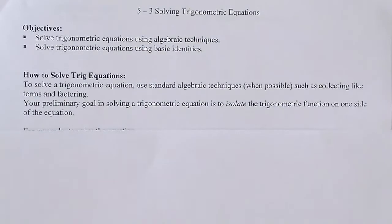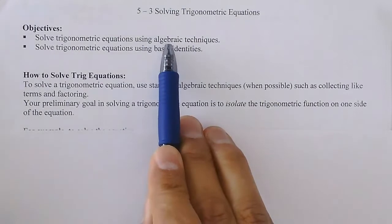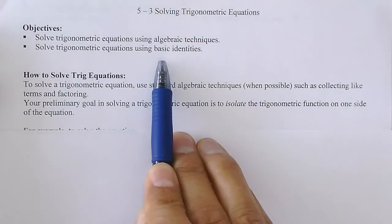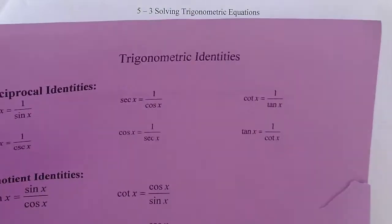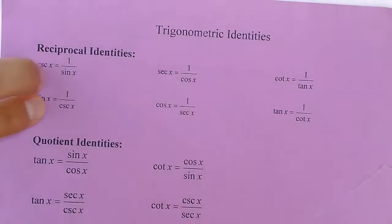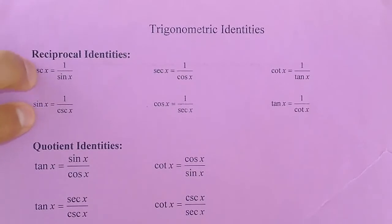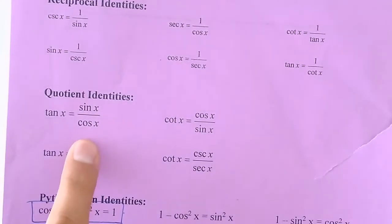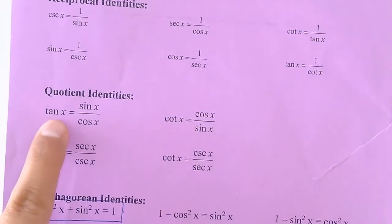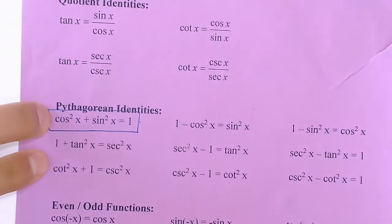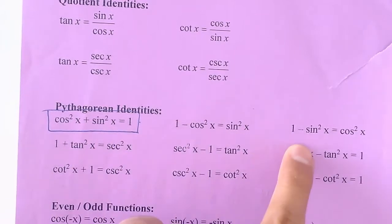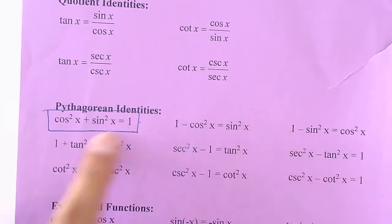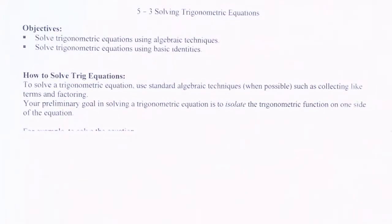Good morning class. We're going to start talking about solving trigonometric equations. To solve trig equations we have to talk about some algebra and some basic identities. The basic identity we're going to be using is on this purple paper — the identities we practiced a while back that we should still have memorized. We'll always have that purple paper in front of us, especially for the Pythagorean ones: cosine squared plus sine squared equals one. So, how do you solve trig equations?